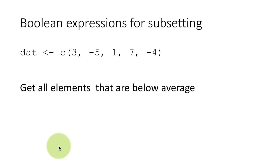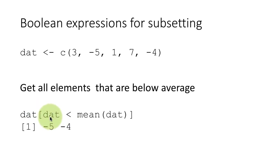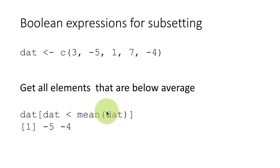Most of the time we'll be working with data frames, not individual vectors. Every column of a data frame is actually a vector, and many times we operate on individual columns. Unless you have a good grasp of how vectors work, you won't be comfortable with R. For another example, to get all elements below average: dat[dat < mean(dat)]. The mean of dat is one number; dat < mean(dat) gives a Boolean vector with TRUE only for elements less than the average. In this case, only the two negative elements are below average, so you get back only those.